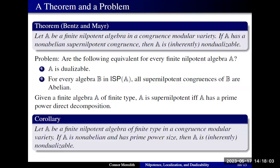In particular we have this result: if A is a finite nilpotent algebra of finite type in a congruence modular variety, and A is non-abelian of prime power order, then A is inherently non-dualizable. So there is at least a size restriction on dualizable nilpotent algebras of finite type.